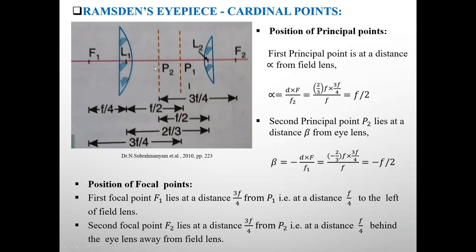Second principal point P2 lies at a distance beta from the eye lens. We will calculate beta. Beta is equal to minus D into EF upon F1. D is 2 by 3F, it means minus 2 by 3F into this F is 3F by 4 upon EF, so minus F by 2. This means second principal point P2 lies at a distance of F by 2, see F by 2 from this eye lens. It is negative because it is towards left side according to sign convention.